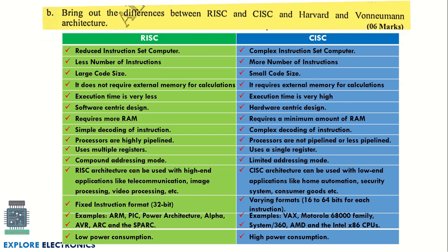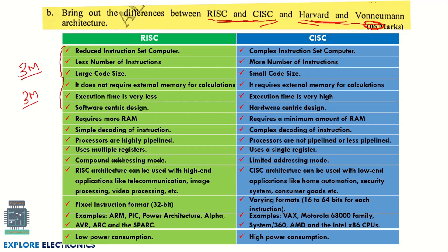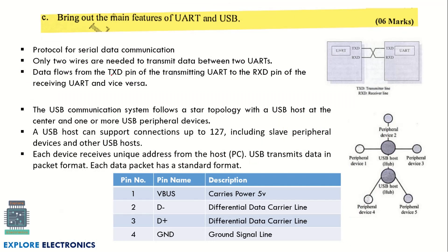The next question asks you to bring out the differences between RISC and CISC, and between Harvard and Von Neumann architectures. These are two separate questions — RISC vs. CISC carries three marks and Harvard vs. Von Neumann carries three marks, totaling six marks. Write at least four to five differences for each pair. For Harvard vs. Von Neumann, refer to the relevant video for that explanation.